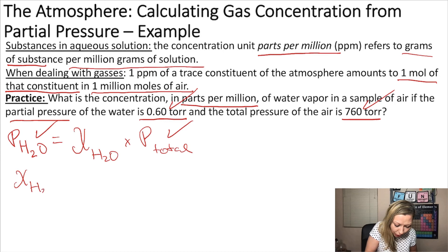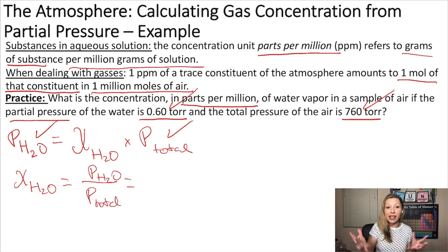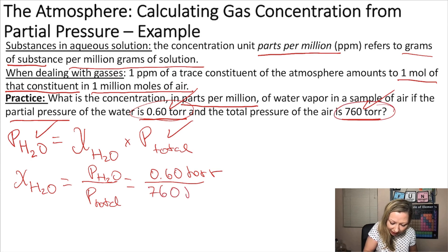Chi H2O equals the partial pressure of H2O divided by the total pressure of the air sample. Let's plug in the values: 0.60 torr divided by 760 torr gives us 7.89 times 10 to the negative fourth. The torrs cancel out, so we have no units for the mole fraction.